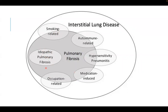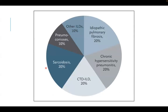IPF is a fibrosis process from the start, which is why immunosuppression is not recommended as treatment. Idiopathic pulmonary fibrosis constitutes 20% of pulmonary fibrosis pathologies, the same proportion as chronic hypersensitivity pneumonitis, connective tissue disease interstitial lung disease, and sarcoidosis. The remaining 20% is divided into pneumoconiosis at 10% and other interstitial lung diseases at 10%.